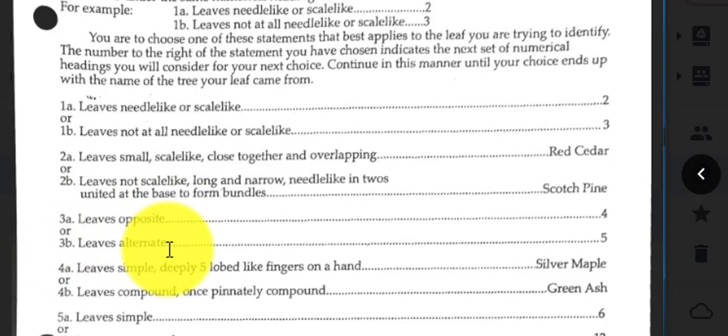So that's what a dichotomous key is, and as you can tell, when you go across a couplet, you'll either see one of two things. You'll see which couplet to go to next. That's what these numbers refer to. So this means I have to go to couplet number two, and this means I have to go to couplet number three, or you'll get a species name, and at that point, you've identified the species that you were looking at.